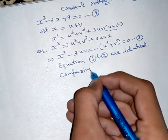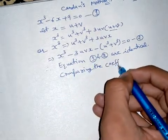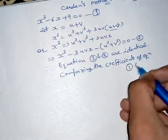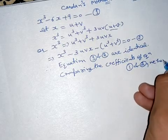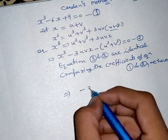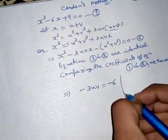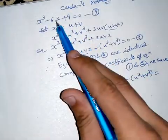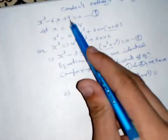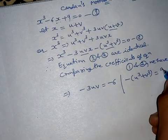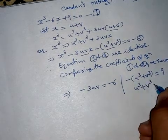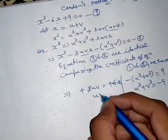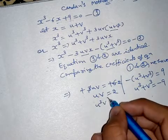Comparing the coefficients of equation one and equation two, we have: minus 3uv equals minus 6, so uv equals 2. And minus (u cubed plus v cubed) equals 9, so u cubed plus v cubed equals minus 9.